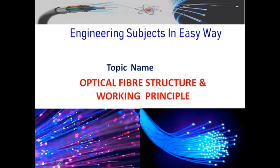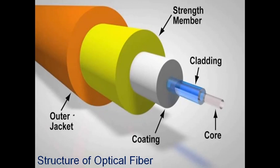In today's class I am going to discuss the optical fiber structure and its working principle. As a continuation of the previous class on the fundamental block diagram of optical fiber, we are going to see the fiber structure as well as its working principle. This is the basic structure of an optical fiber — here we can see three major parts: the white part is called the core, followed by cladding, and then the outer covering called the outer jacket.